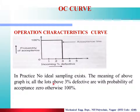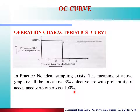The meaning of the above graph is: all lots above 3% defective have a Probability of Acceptance of 0, otherwise the Probability of Acceptance is 100%. This is the Ideal Operating Characteristics Curve.